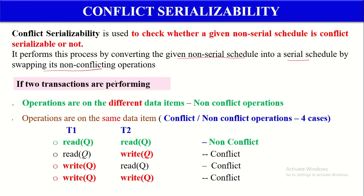Let's check what Conflict Operations and Non-Conflict Operations are. If two Transactions are performing Operations on different Data Items, then those Operations are known as Non-Conflict Operations. Because the Transactions are doing operations on different Data Items, there is no Consistency issue. So, Operations performed on different Data Items are Non-Conflict Operations.